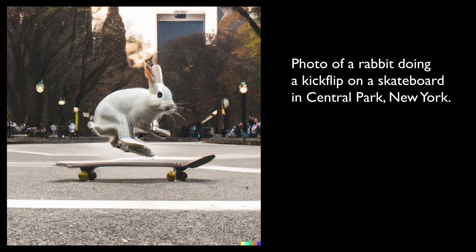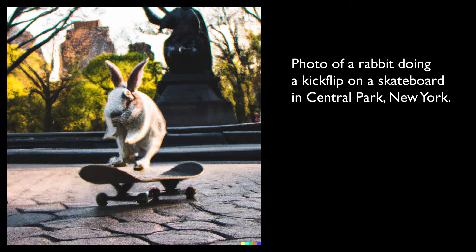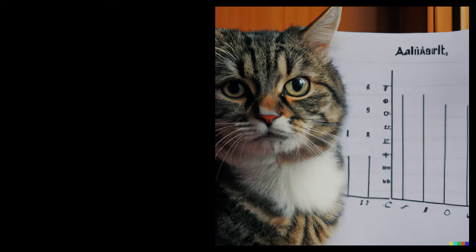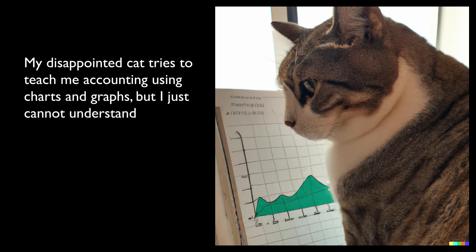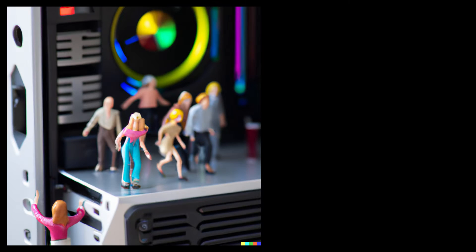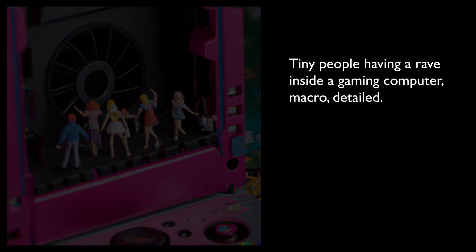Here we have a rabbit doing a kickflip on a skateboard in Central Park, New York. And a cute illustration of a bunny skateboarding in Tokyo. Next up, my cat is trying to teach me accounting with charts and graphs, but is disappointed that I am failing to understand. And here is a macro photo of some tiny people having a rave inside of a gaming computer.